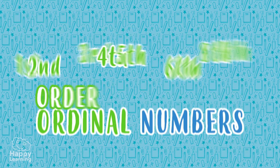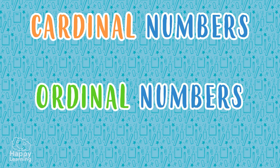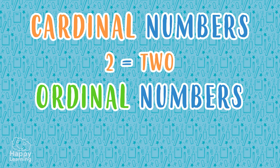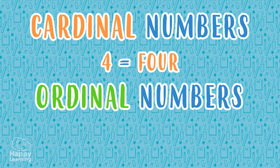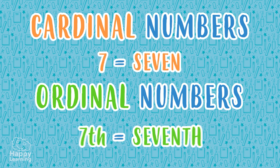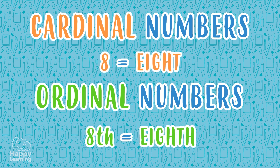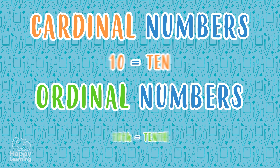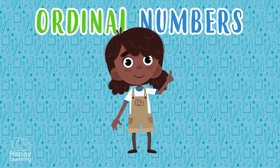Ordinal... ordering... ordinals! It's easy peasy. For every cardinal number there is an ordinal number. The cardinal number one corresponds to the ordinal first, written as 1st. Two corresponds to second, three to third, four is called fourth, and five is fifth.